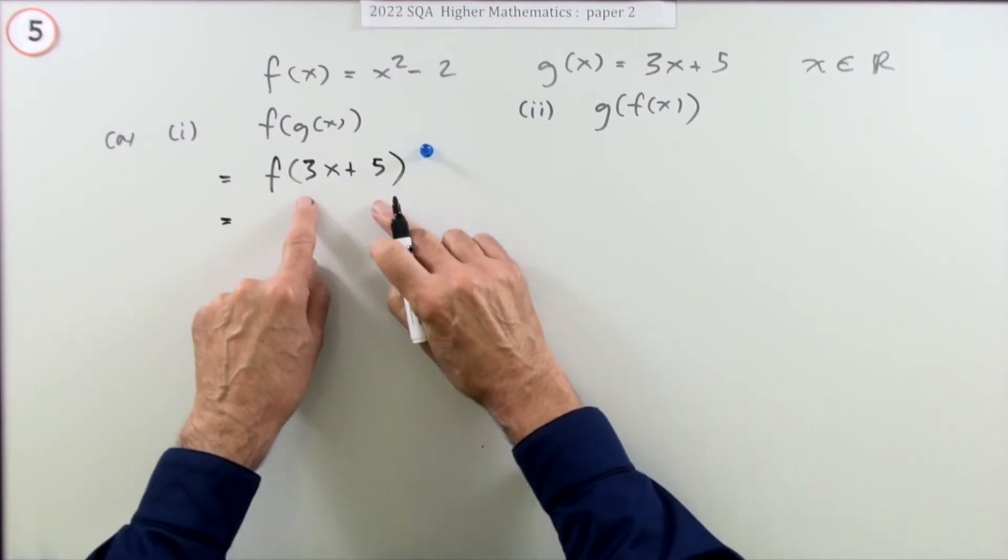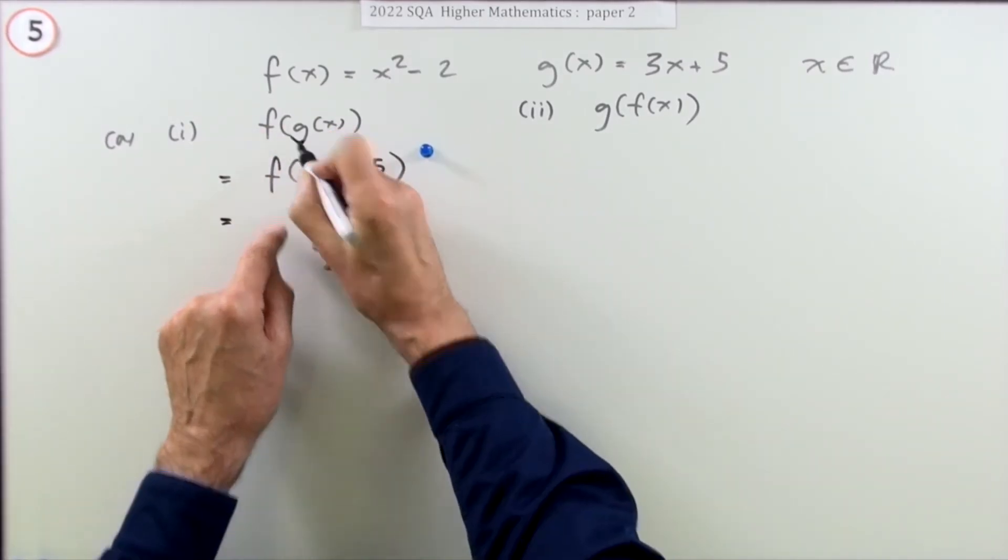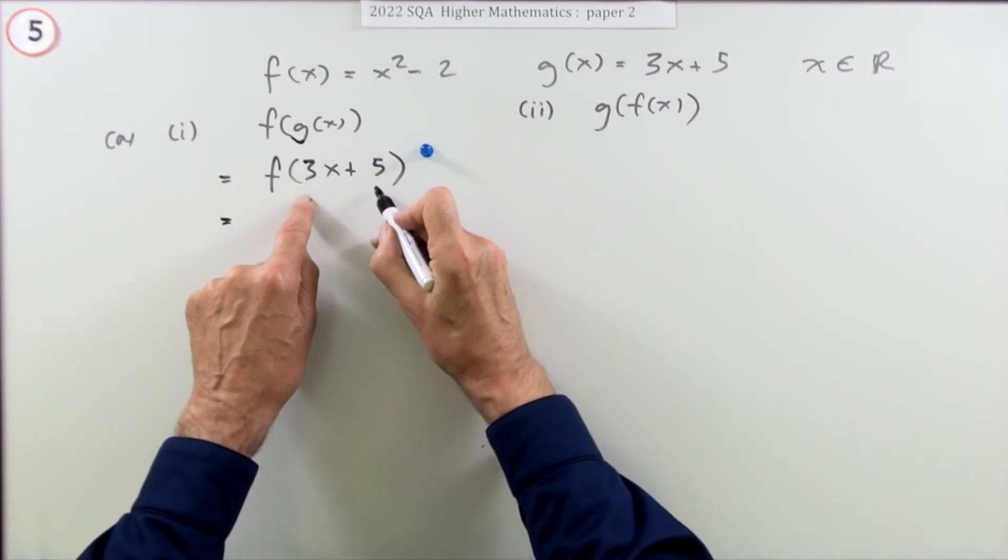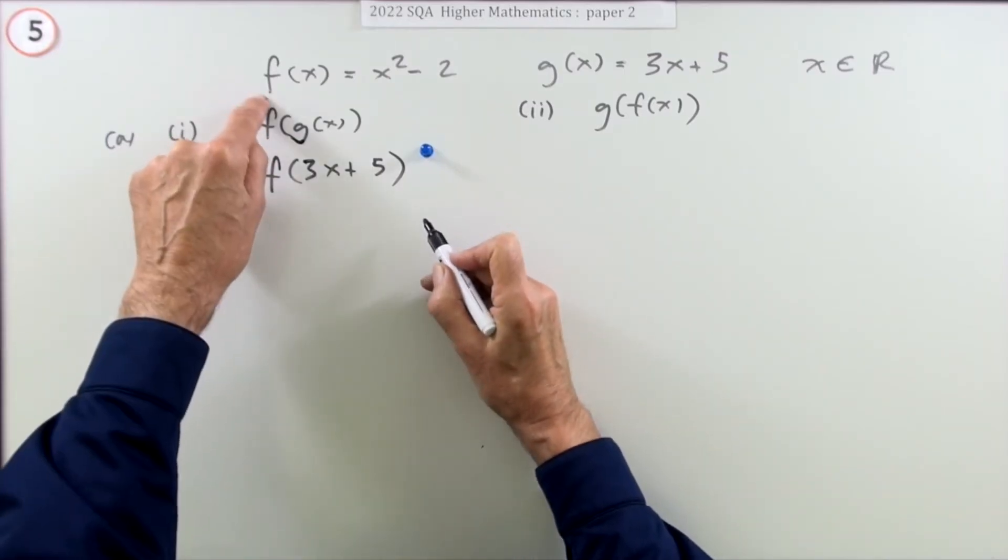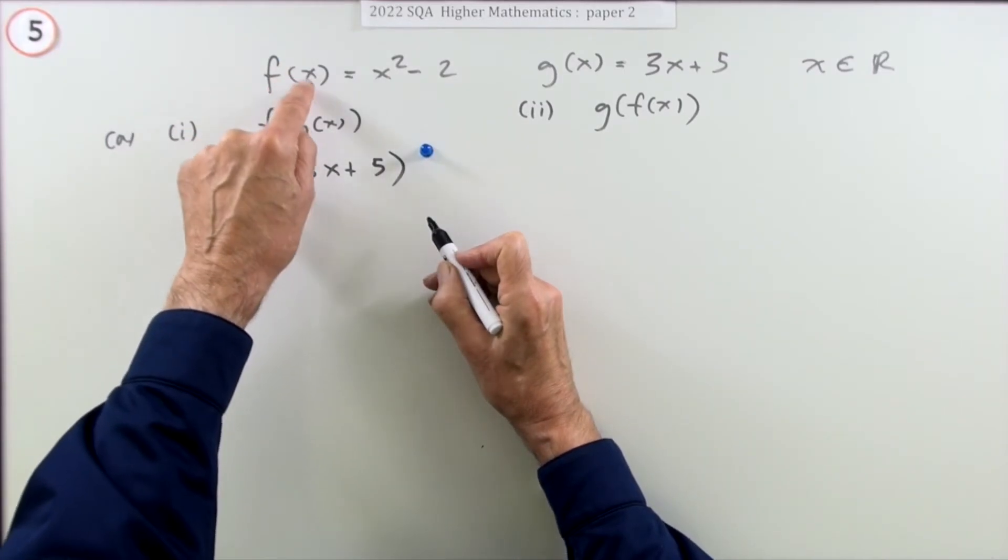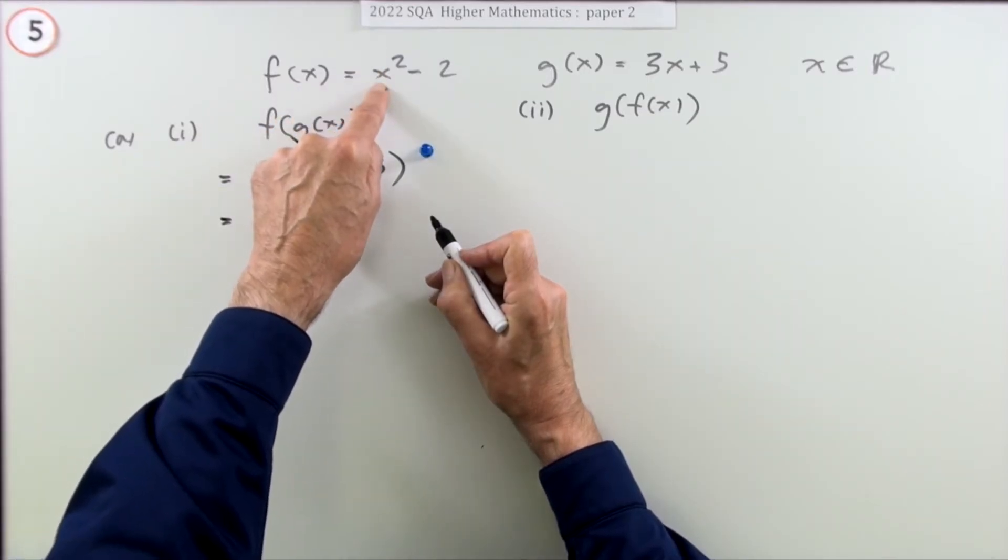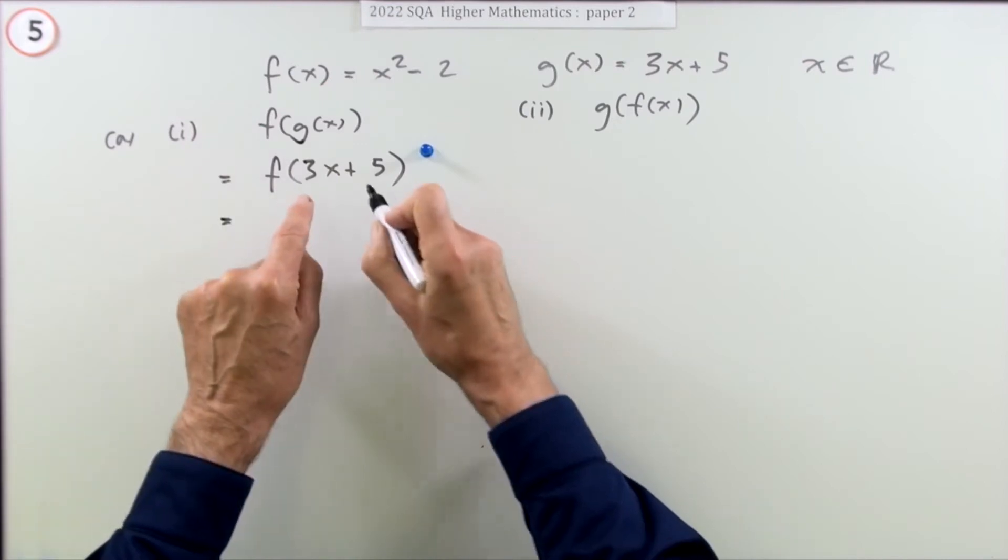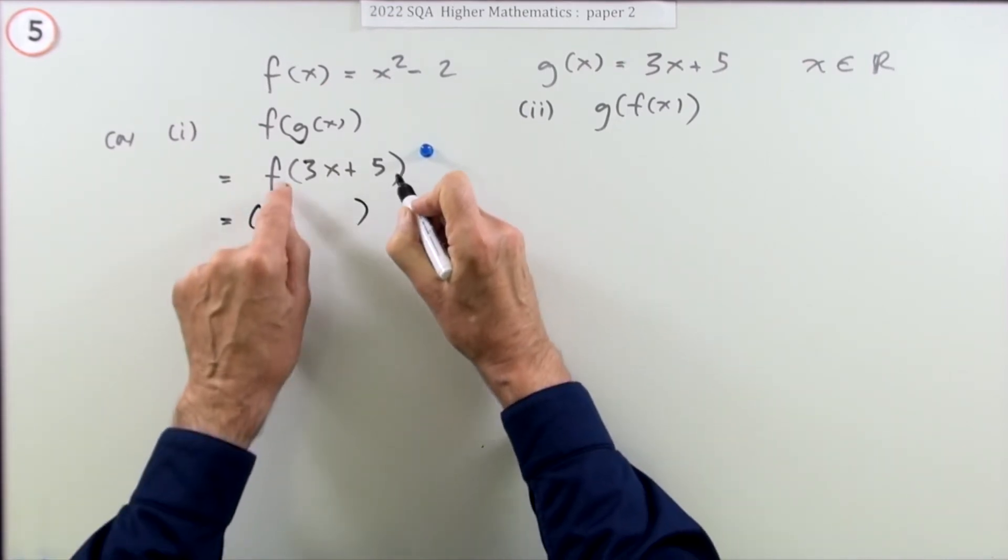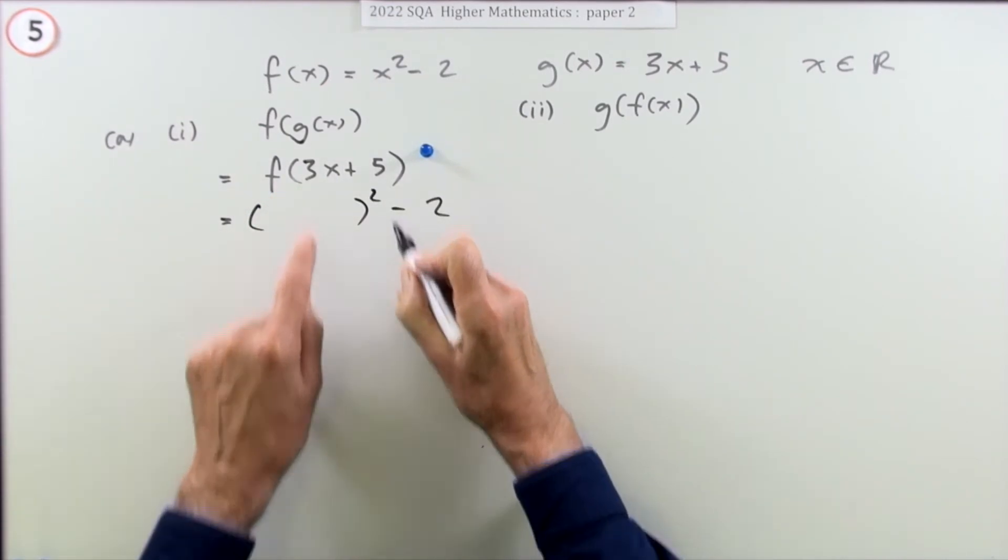The tricky part isn't just replacing it, it's interpreting it. f acting on whatever you put in produces that input squared minus 2. So f acting on this will produce that squared minus 2,